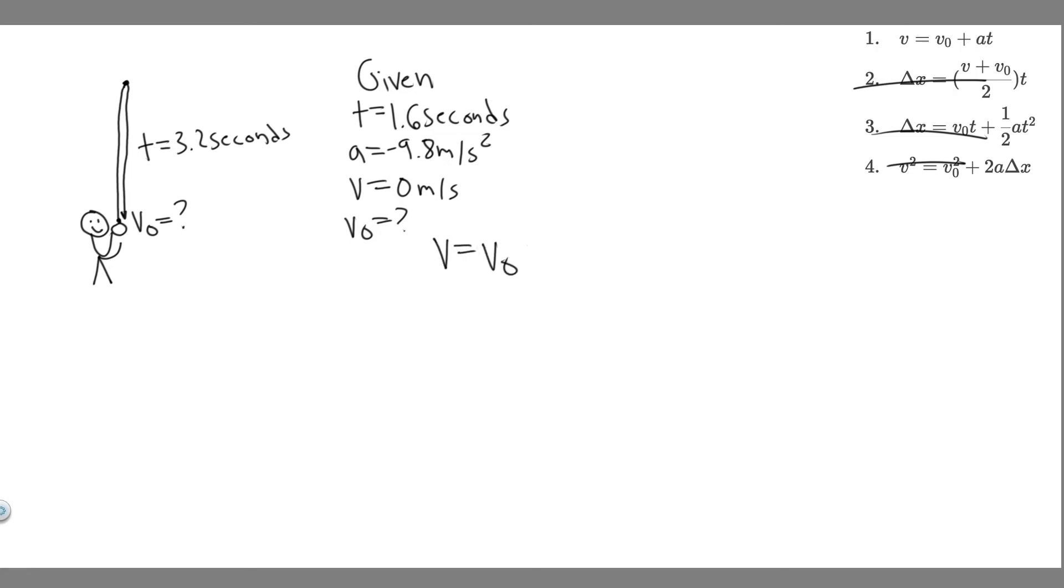v equals v₀ plus a times t. We can plug in: v is 0 equals v₀, which is what we're solving for, plus the acceleration. So it's plus a negative, minus 9.8 times t, which is 1.6. Notice this is negative. The reason acceleration is negative is because it's downwards - it's slowing down because of gravity.